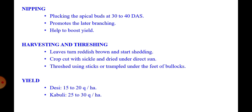Nipping is a most important operation in Bengal Gram cultivation which facilitates branching. If the number of branches is more, the number of fruits or pods will be more and ultimately we get more yield. In this nipping practice, the apical buds of the crop are plucked at about 30 to 40 days after sowing to stop apical growth and promote lateral branching. The plant becomes more vigorous and produces more branches, more flowers and more pods, resulting in more yield.